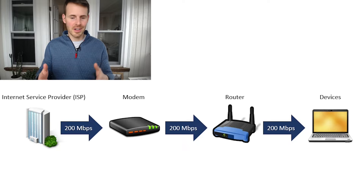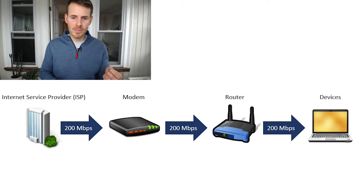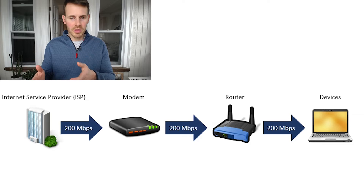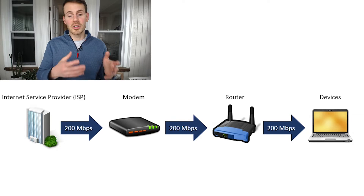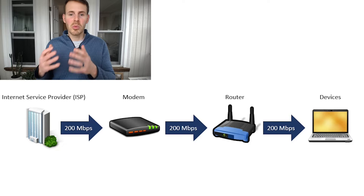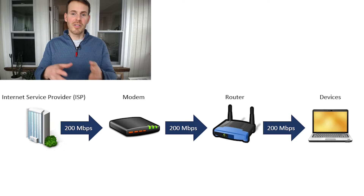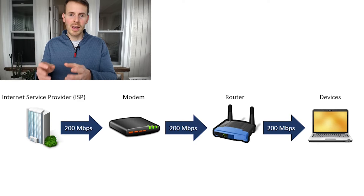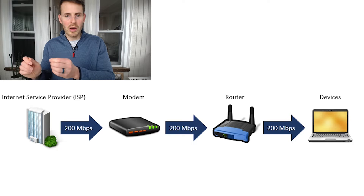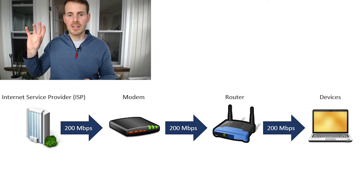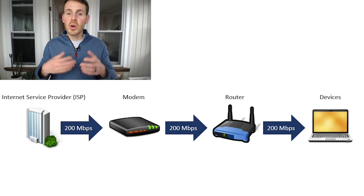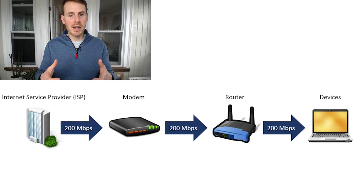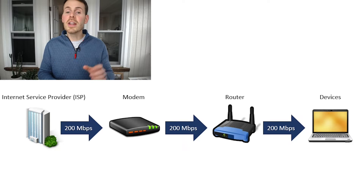The first devices we want to cover — and these are the most important components of your home network — we want to look at your modem and your router. Here's an example so we can walk through it: you need to understand that your devices have to support the internet speed provided by your internet plan. Your internet service provider delivers an internet connection to your modem, your modem passes this internet connection to your router, and your router passes this connection to your devices.